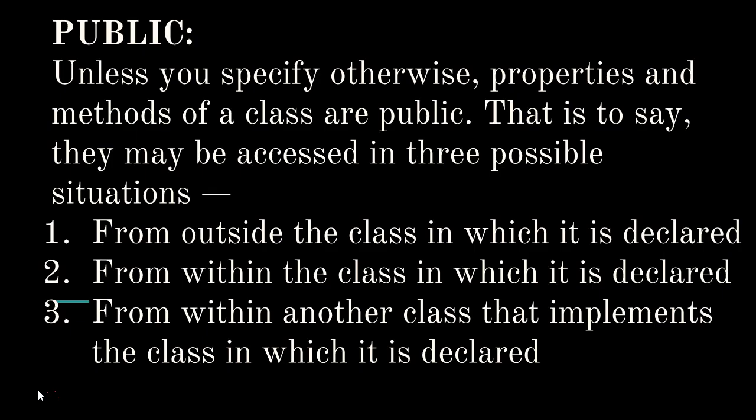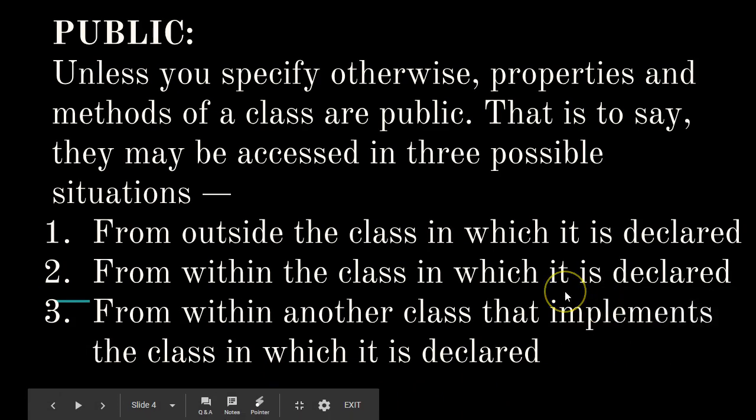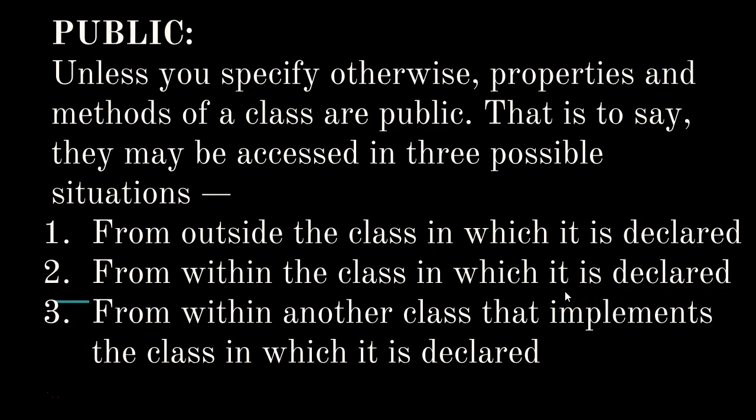Public: unless you specify otherwise, properties and methods of a class are public. That is to say, they may be accessed in three possible situations: from outside the class in which it is declared, from within the class in which it is declared, and from within another class that implements the class in which it is declared. Basically, if you declare a variable or function as public inside a class, it means you can access that variable from anywhere — inside its own class, from another class that extends it, or from just anywhere.